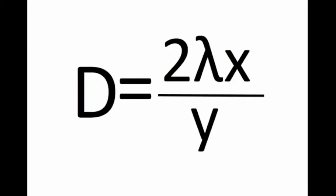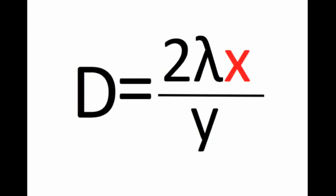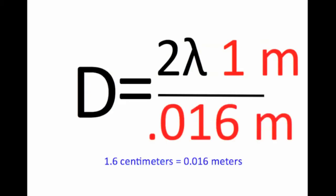So what do we do with all this information? We can find the diameter of a hair using this formula. D is the diameter of the hair — that's what we want to find. X is the distance from the hair to the screen: 1 meter. And Y is the length of that middle line in the diffraction pattern, from the dark spot on one side to the dark spot on the other — you said that was 1.6 centimeters.